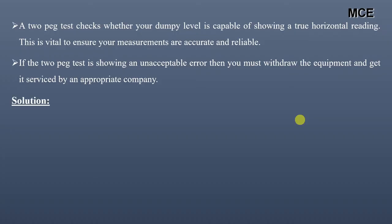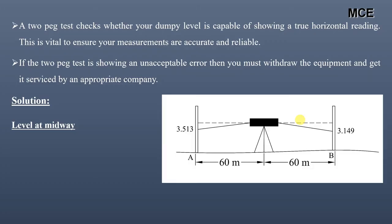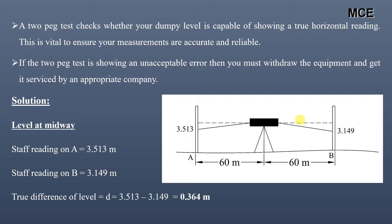Now coming back to the solution. When the level is midway between the two stations A and B, staff reading on A is 3.513 meters and staff reading on B is 3.149 meters. Since the level is exactly midway between the two stations, the true difference of level is 3.513 minus 3.149 which equals 0.364 meters.